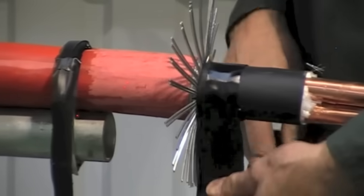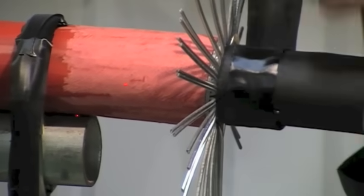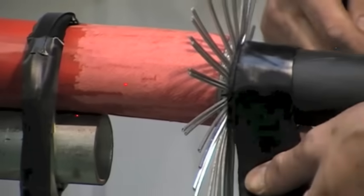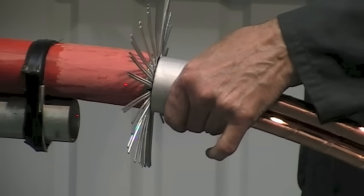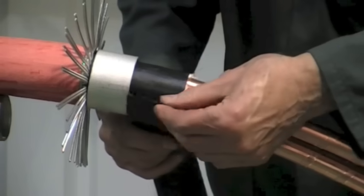Apply mastic over the bedding. This will stop moisture travelling down underneath the armour wires.